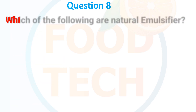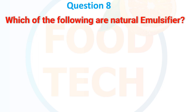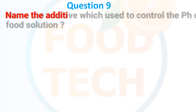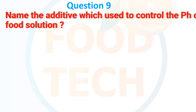Which of the following are natural emulsifiers? A. Lecithin, B. Mono and diglycerides of fatty acids, C. Bile acids, D. All of the above. The answer is D. All of the above.